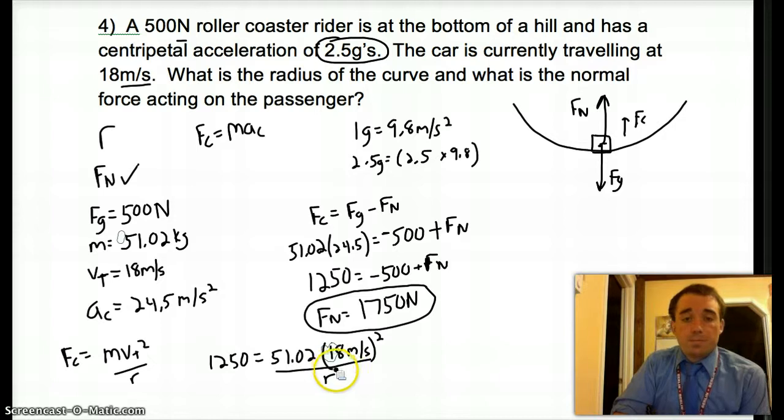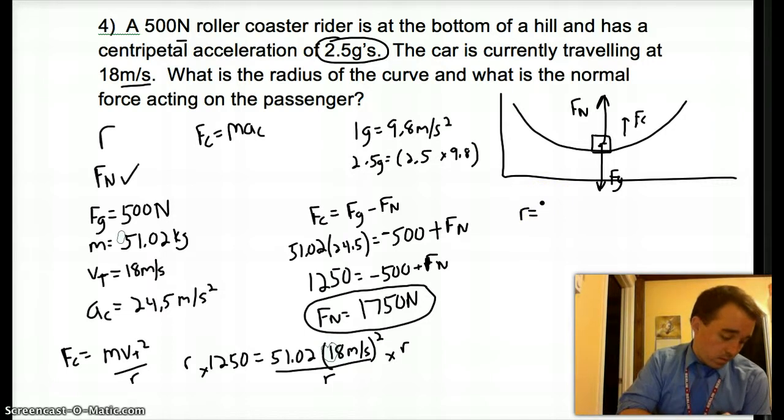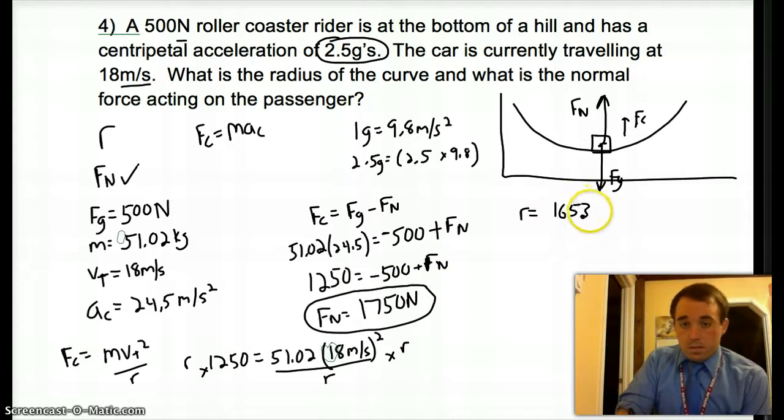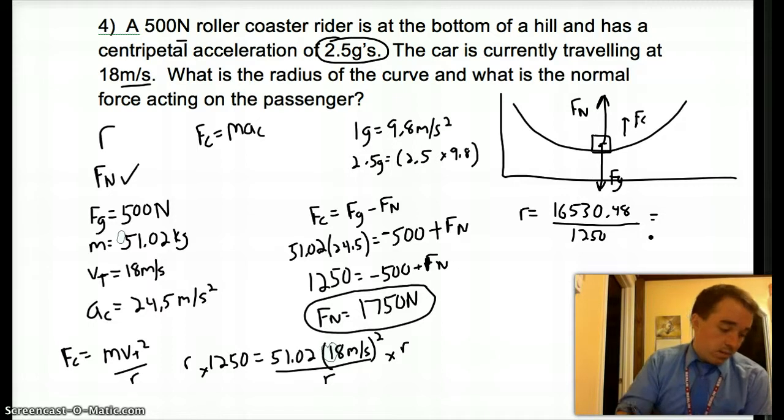To solve this, it's a little tricky. You've got to multiply first up by r on both sides, because it's in the denominator. Then you'd have to divide by the 1250, so I'm just running out of room on that side. So r equals 51.02 times 18 squared, which is 16,530.48 over the 1250, and hopefully I'm not running onto my head right now. 16,530.48 over 1250 gives me a radius of 13.22 meters.